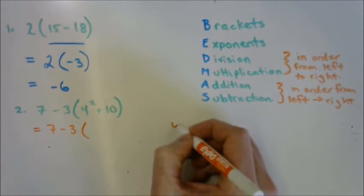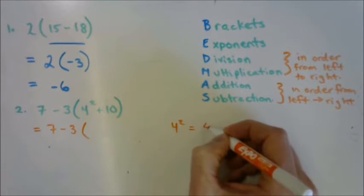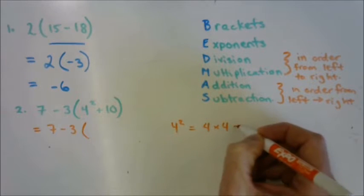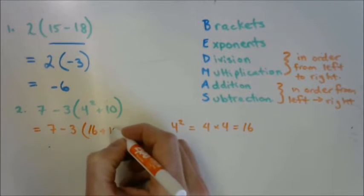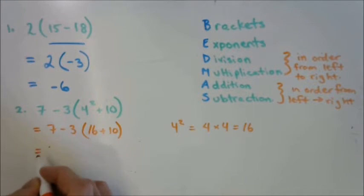And if we're not sure what 4 squared is, we can go off to the side. 4 squared is just 4 times 4, which is 16. Then we have plus 10. You could definitely do that all in one step. Just don't make a mistake.